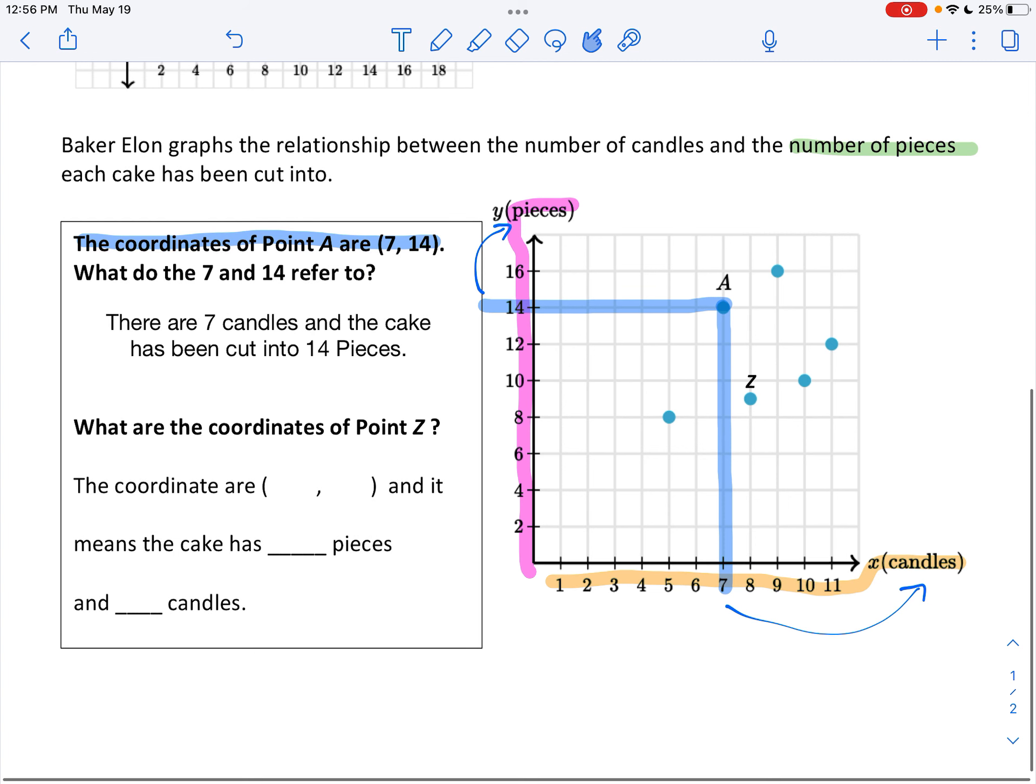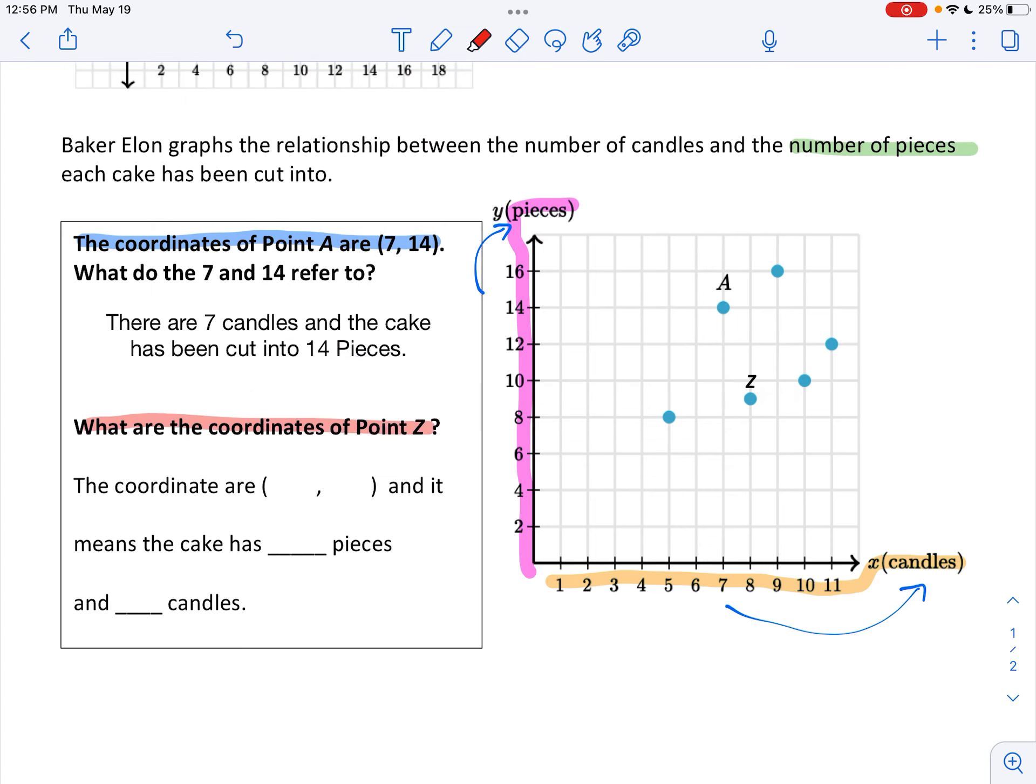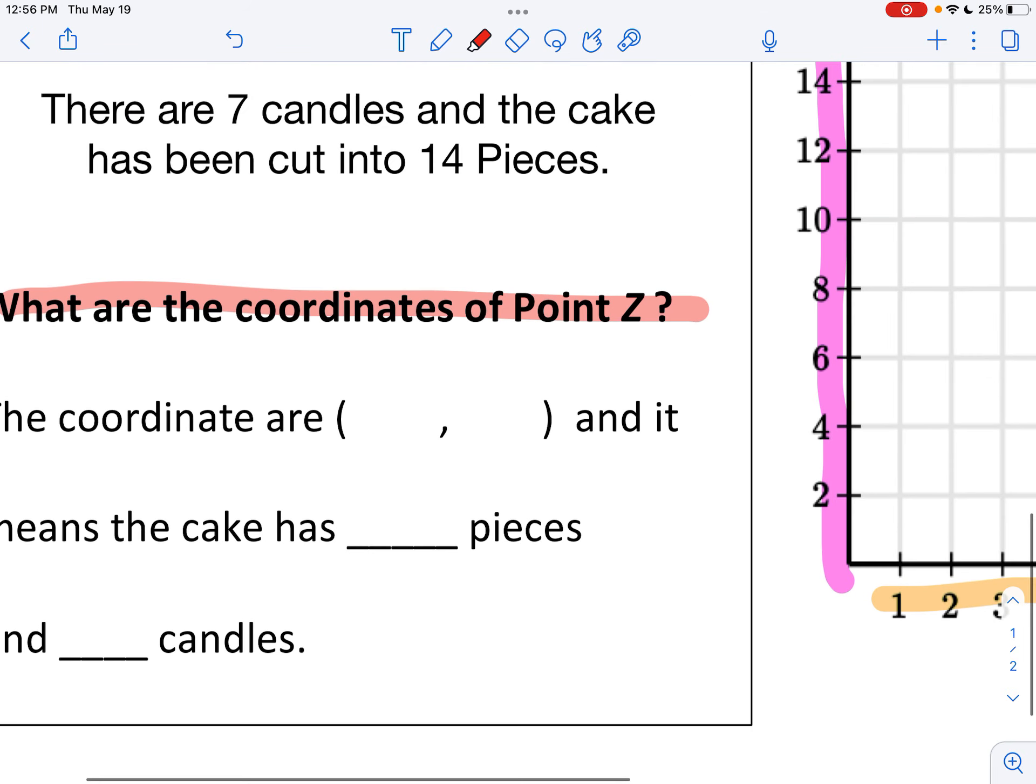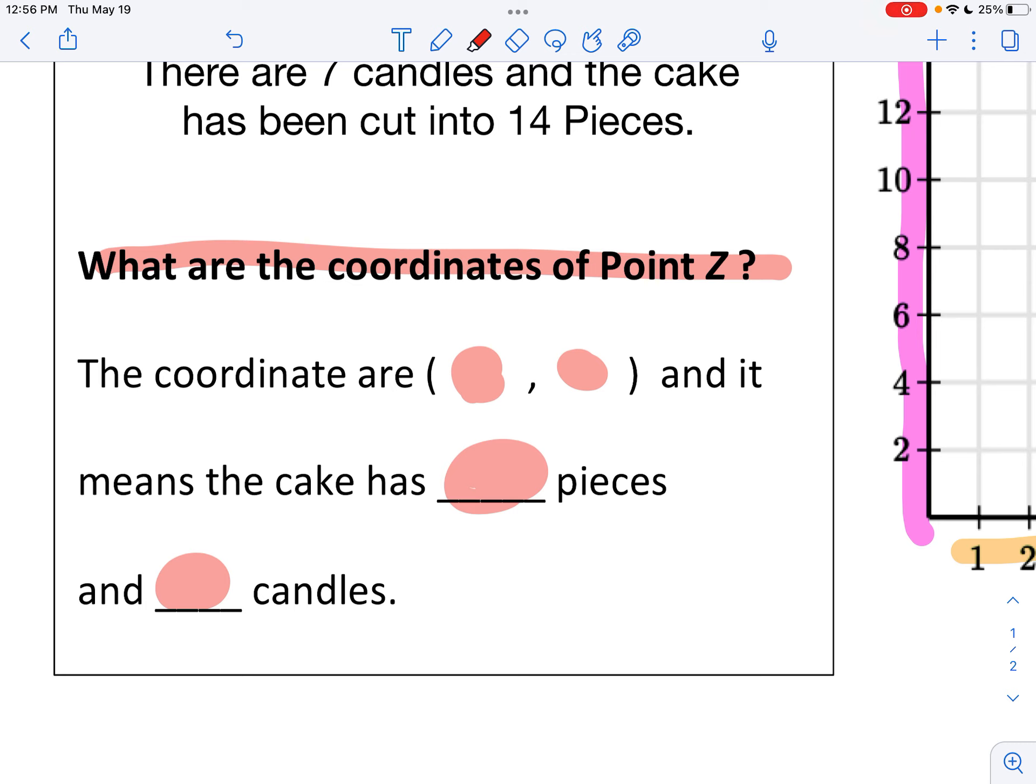So your job now is to do point Z. So now you're going to look at Z, the coordinates of point Z. You need to put it into the parentheses and tell me how many pieces and how many candles. All right.